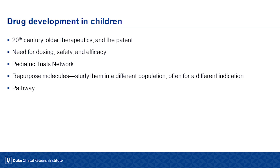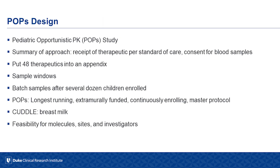Our job at the Pediatric Trials Network is to repurpose older molecules that are very commonly used in children but were never appropriately studied. Even if we tried to use older patient models, animal models, or computer models to estimate dosing, we have seen disastrous errors — because pediatric physiology is so different from adult physiology. Given this public health imperative and the need to use taxpayer dollars parsimoniously, we genuinely needed new trial designs. About 15 years ago we developed the first major step: the Pediatric Opportunistic PK Study, or POPS design.